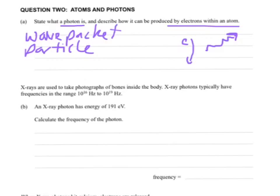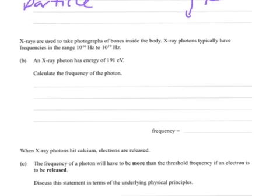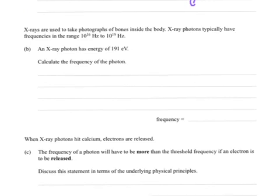Question B. X-rays are used to take photographs of bones inside the body. X-ray photons, because remember, photons are not just visible light. X-rays are not visible to the human eye, but they still produce photons because they're electromagnetic radiation. X-ray photons typically have frequencies in the range of 10 to the 16 to 10 to the 19 hertz. An X-ray photon has an energy of 191 electron volts.